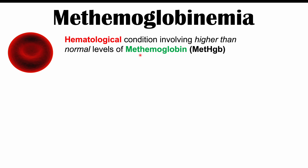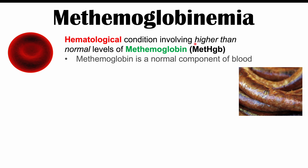Methemoglobinemia is a blood condition, or hematological condition, involving higher than normal levels of methemoglobin. Methemoglobin is a particular form of hemoglobin. In healthy patients, methemoglobin is actually a normal component of blood at a very small percentage — typically up to 1% or maybe up to 2% of normal hemoglobin.